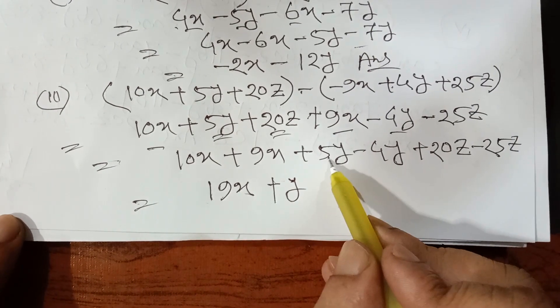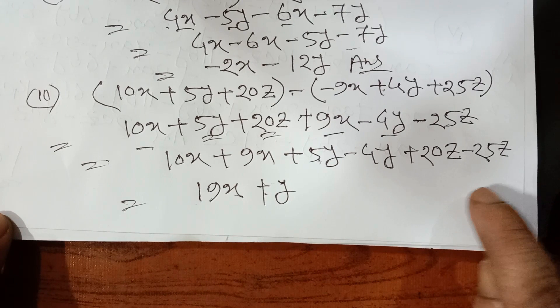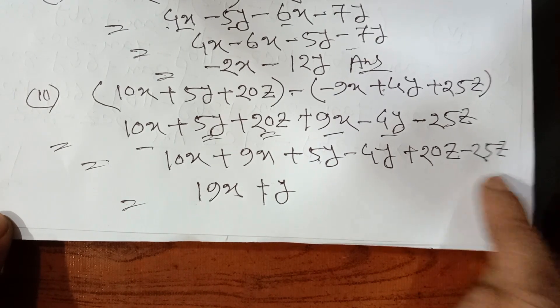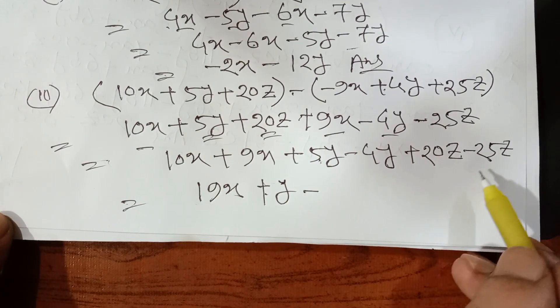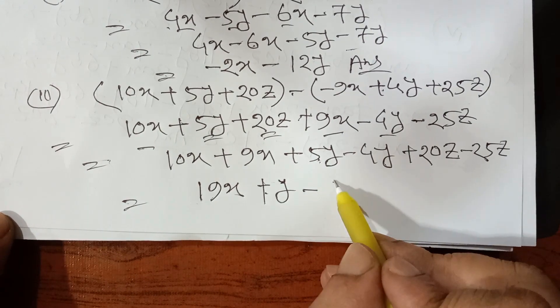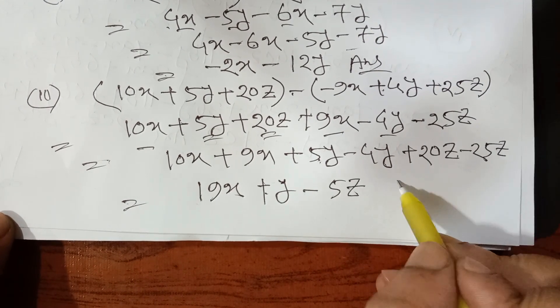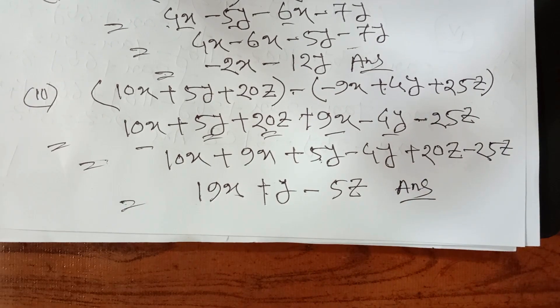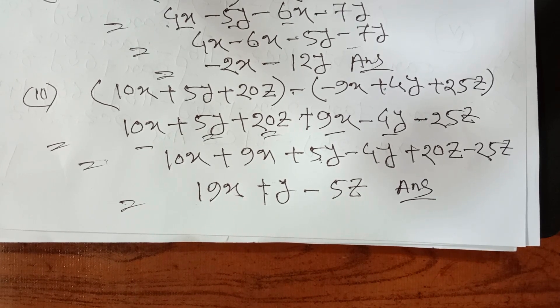Theacus equals minus 2, and theacus equals minus 3, and theacus equals minus 1. Theacus equals minus 2 minus 2. We are going to get started. We will give you a video to the playlist and link to the video.